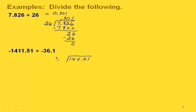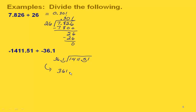Here's what our division problem looks like. Our divisor is not a whole number, so we're going to have to move our decimal point one place to the right. We have to do the same thing to the dividend. Let's rewrite this so that we're clear about what we have — that's the result of moving our decimal point over to the right one place.